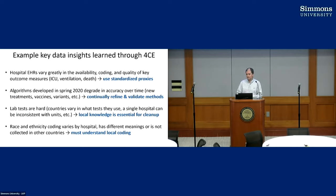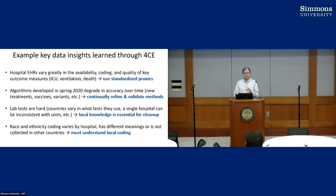Some of the data insights we gained through ACT — separate from the clinical insights — were that hospitals varied greatly in availability, coding, and quality of key outcome measures, which led to our use of proxies in our severity algorithm. Algorithms we developed in spring 2020 don't work now — they degraded in accuracy over time because of new treatments, vaccines, and variants, so we've had to continually improve them. Lab tests are particularly hard: different countries use different kinds of tests, and even within the same hospital, multiple machines may report the same test using different units — a significant challenge for cross-institution harmonization.